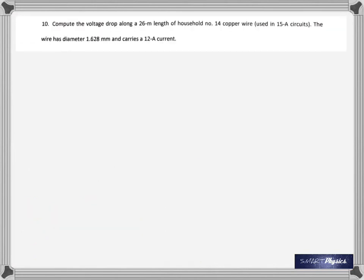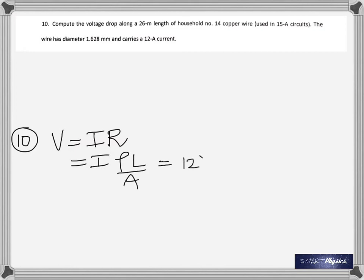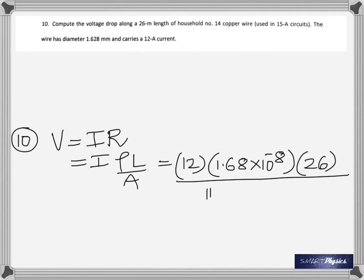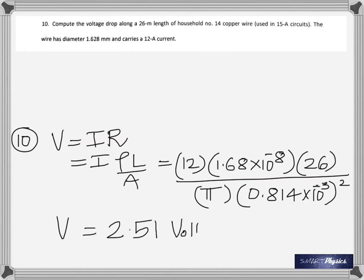The last one: compute the voltage drop along a 26 meter length of household number 14 copper wire. The wire has diameter 1.628 millimeters, carries current 12 amperes. Now voltage according to Ohm's law is the product of current and resistance. In this case the resistance is not given, so first we got to find the resistance. Resistance is given by rho L by A. Rho is the resistivity which will be given, and because this is copper, just took the value of resistivity times the length divided by pi times the radius squared. So 2.51 volts.